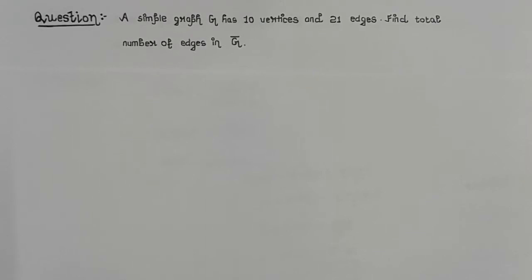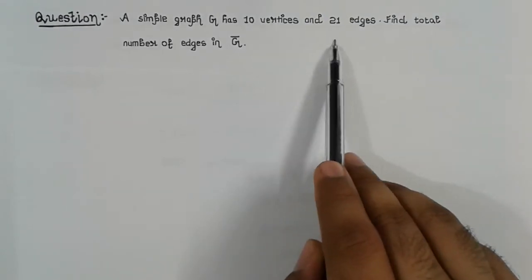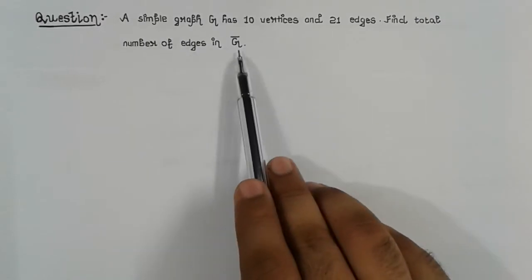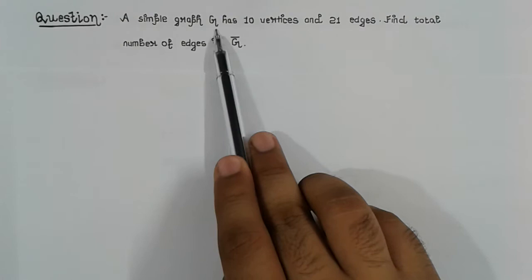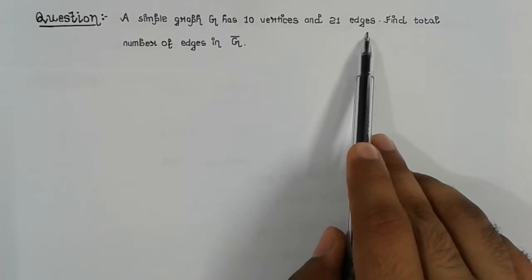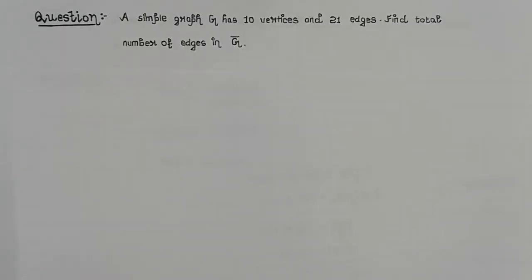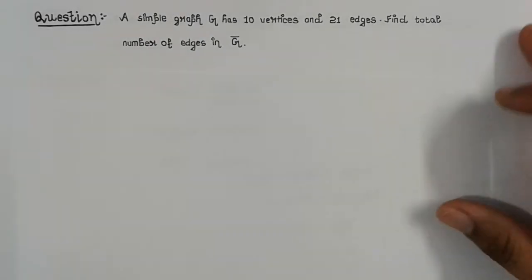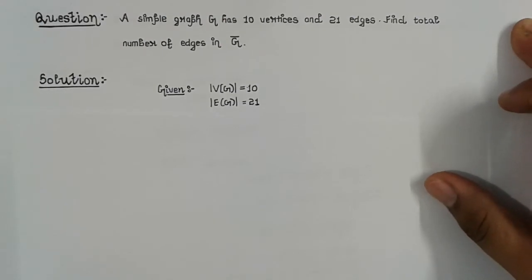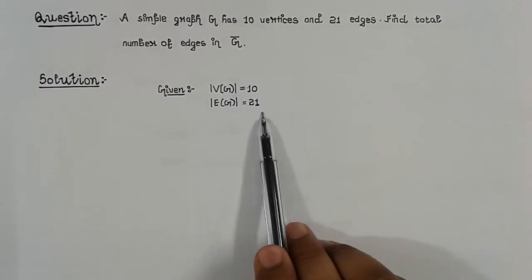This is problem number one. A simple graph G has 10 vertices and 21 edges. Find the total number of edges in G-bar. So we have been given: number of vertices in graph G equals 10, and number of edges in graph G equals 21. We need to find the number of edges in G-bar.